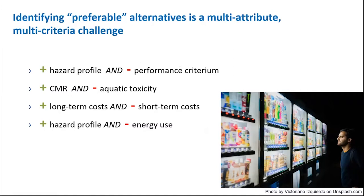For example, one alternative may be preferable from a health and safety perspective — hazard and exposure potential — but doesn't perform as well on a critical technical feasibility criterion. Another alternative may be preferable from a human health perspective, such as low hazard on carcinogenicity, reproductive or developmental toxicity, or neurotoxicity, but may be of concern for aquatic toxicity. One alternative may not be preferable given purchase or reformulation costs compared to others, but is considered more cost-effective over a longer time horizon given durability. One alternative may be more energy intensive than others but less toxic. As a result, it is critical to identify these tradeoffs and understand which are critical, which may be reduced, and which are acceptable.